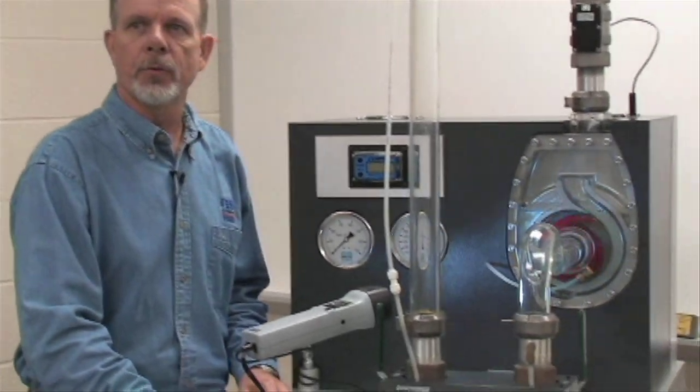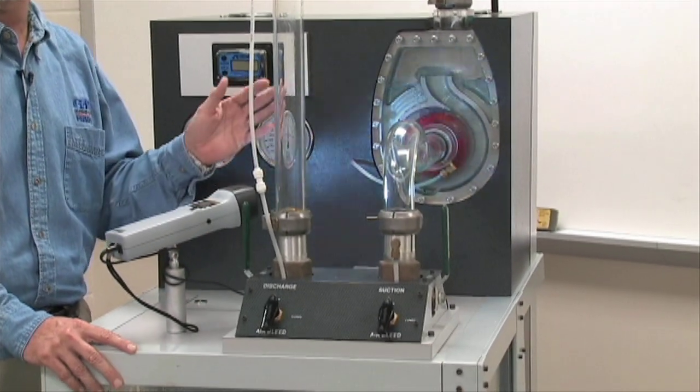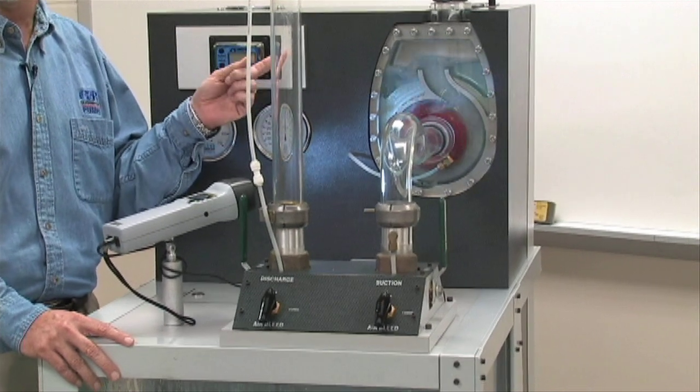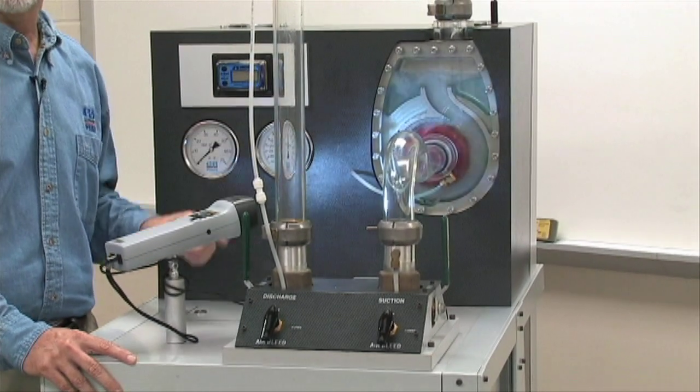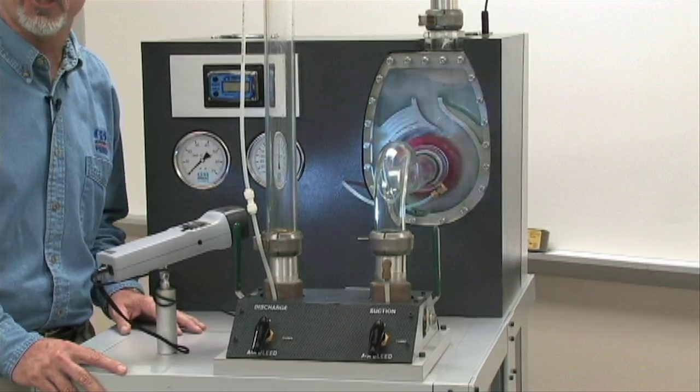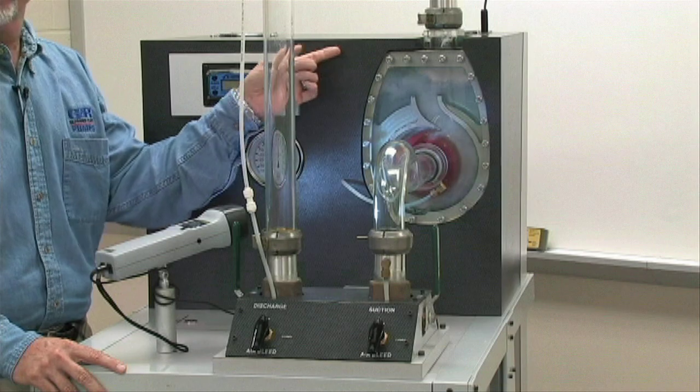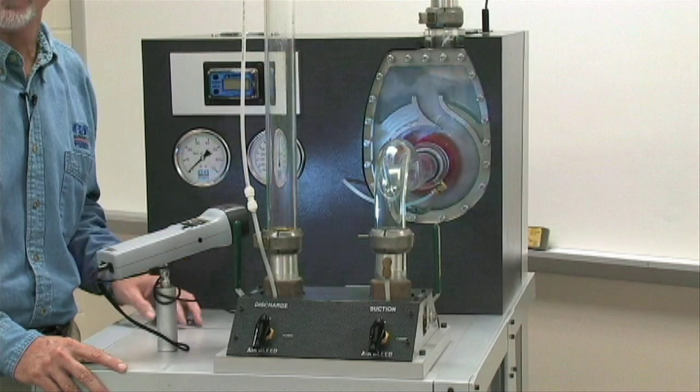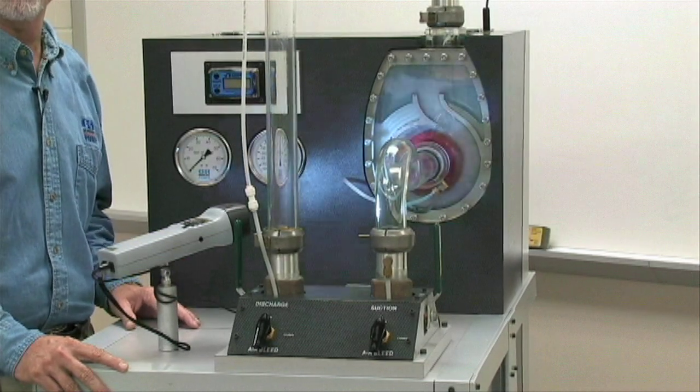Another cause of failure to prime is air binding. During priming, air is handled through the recirculation process and evacuated off the discharge side. Air binding occurs when air is not vented to the atmosphere and collects on the discharge side. The now pressurized discharge line stalls the priming process until the air can be vented.